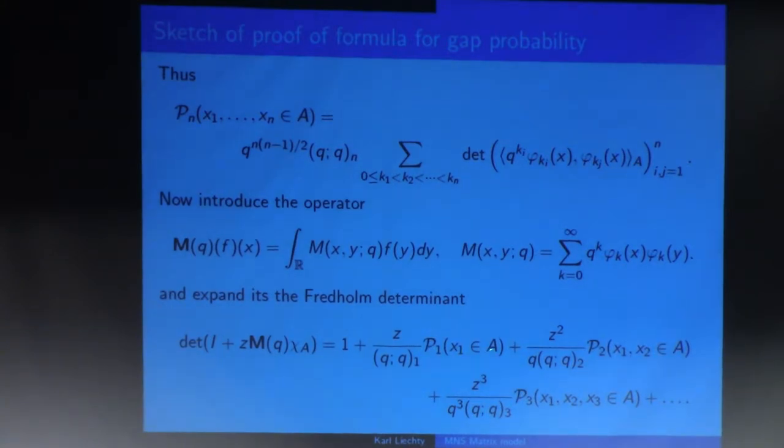But times the probability that in the model with one particle, that particle is in A. And in the next term, in the model with two particles, both of them are in A, et cetera. Those are exactly what I'm looking for. Those are the gap probabilities.